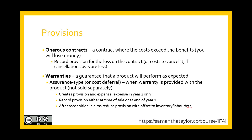A type of provision may be an onerous contract. This is a contract where the costs exceed the benefits — i.e., you would lose money. You would record the provision for the loss in the contract or the costs to cancel it, if the cancellation costs are less.